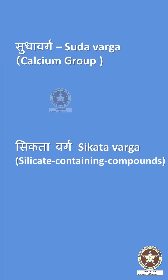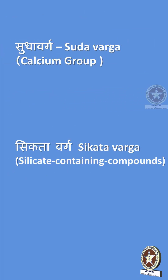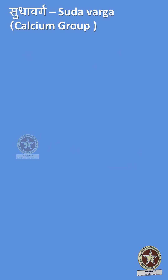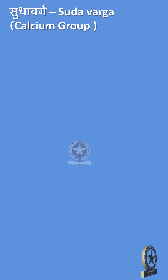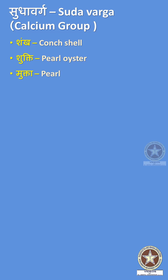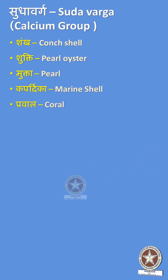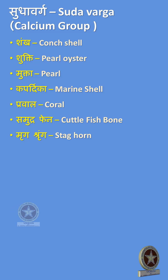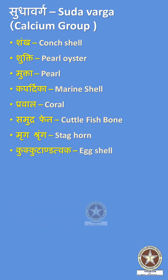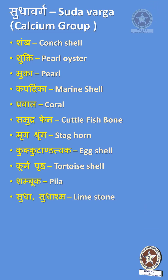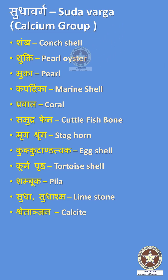Later textbooks of Rasa Shastra included two other categories: Sudha Varga and Sikata Varga. Sudha Varga includes compounds of calcium origin: Shankha (Conch Shell), Shukti (Pearl Oyster), Mukta (Pearl), Kapardika (Marine Shell), Prawaala (Coral), Samudra Phena (Cuttlefish Bone), Mrigashrunga (Staghorn), Kukkutandatwak (Eggshell), Kurma Prishtar (Tortoise Shell), Shambuka Pailak, and Sudha or Sudhaashma (Limestone), Shwetanjana (Calcite).